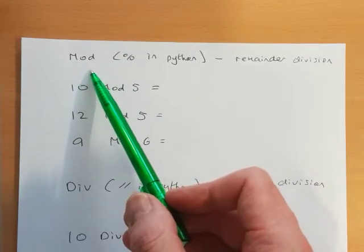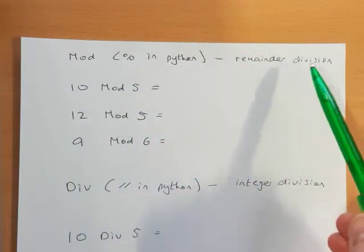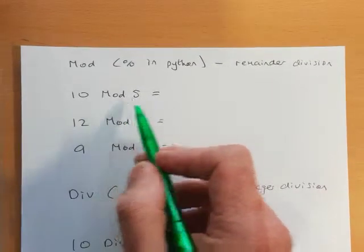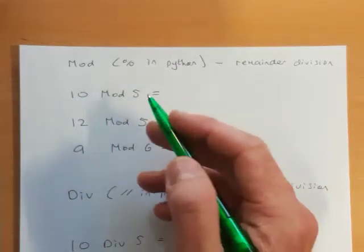We call that remainder division. So we do a division and then whatever's left is the answer. So 10 mod 5 - well, 5 goes into 10 twice, there's nothing left over, so that's our answer there.